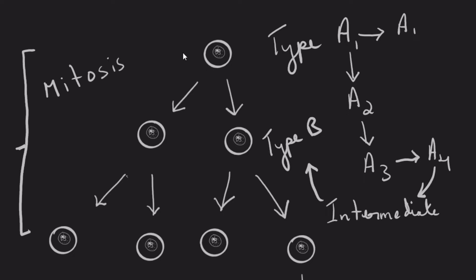All these cells are diploid in nature — they carry the normal set of chromosome number. 2N here means diploid, or the normal set of chromosome number.